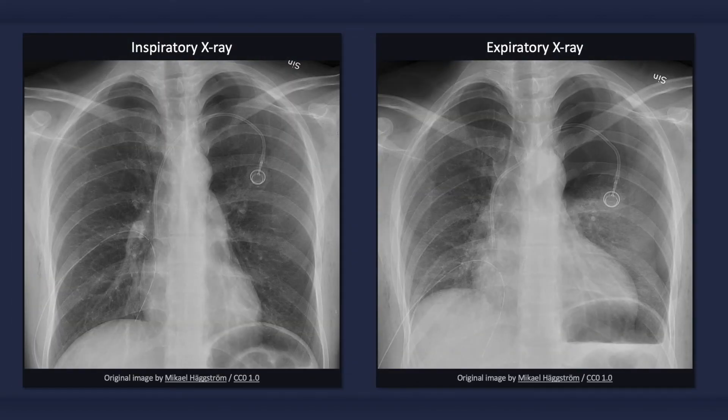The trachea is central, as mediastinal shift does not occur. Normally, the chest x-ray is performed with the patient on inspiration. Can you detect the pneumothorax on the inspiratory x-ray? Now how about on the expiratory x-ray? Occasionally, the air between the lung and the pleural space is easier to detect with an expiratory image.